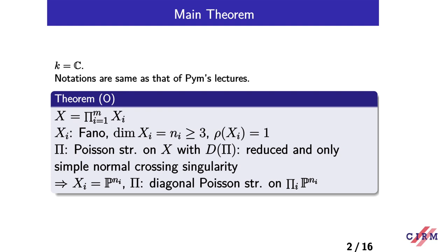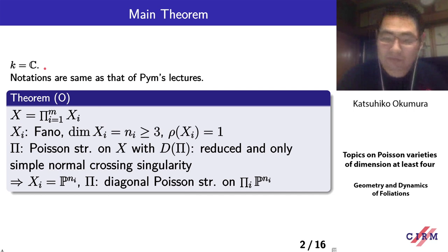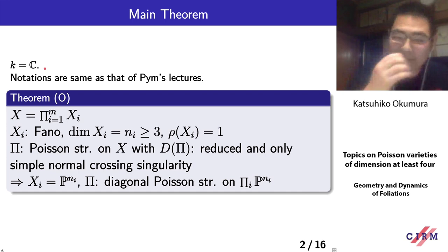Poisson geometry also works even if k is not the complex number field, but some classification results need the assumption k equals C, so we assume k equals C. Almost all notations are the same as in Kim's lectures.